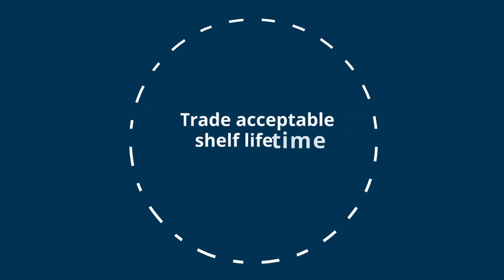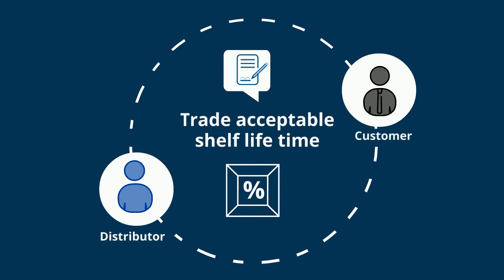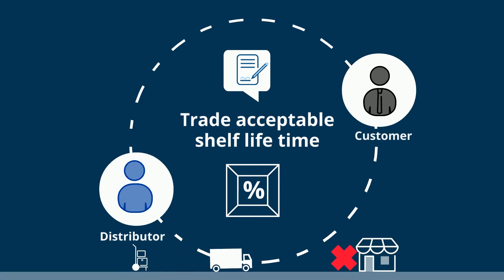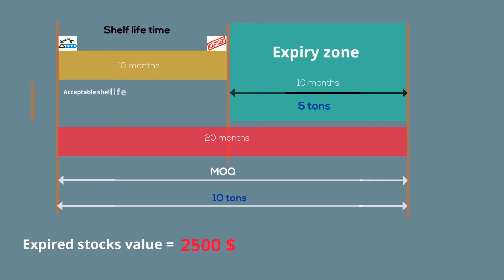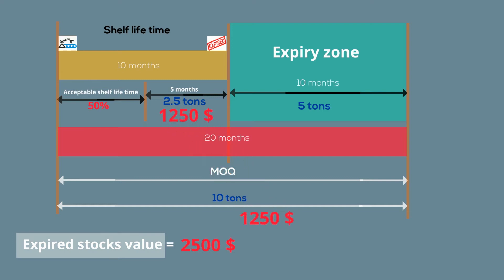The $2,500 US dollar is not the only expired stock cost. There is something called the trade acceptable shelf lifetime, usually measured as a percentage of the total shelf lifetime — an agreement between the distributor and customer not to receive stock below that percentage. Assuming the acceptable shelf lifetime is 50%, there are an additional 5 months potentially expiring, equivalent to 2.5 tons with a COGS value of $1,250 US dollar.